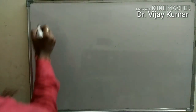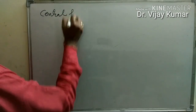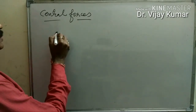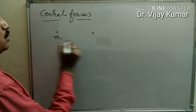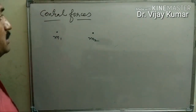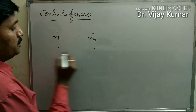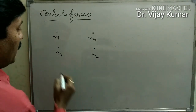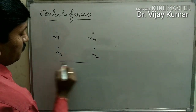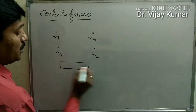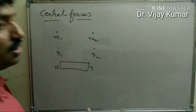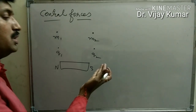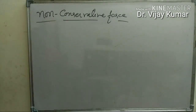All central forces are examples of conservative forces. The gravitational force between two bodies is a central force. The electrostatic force between two charged particles is also a central force. The magnetic force between two magnetic poles is also an example of a central force. It means gravitational force, electrostatic force, and magnetic force are all conservative forces.